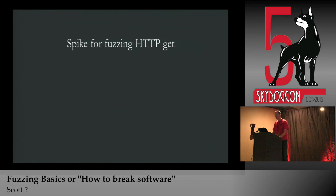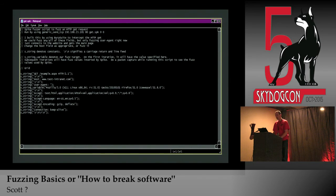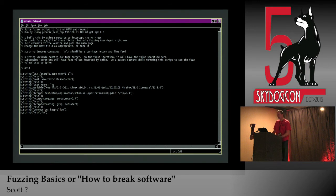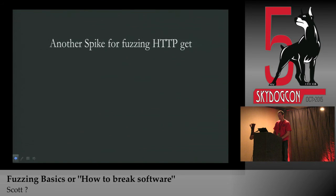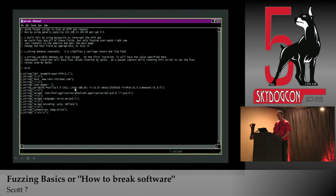I've got some sample Spikes for fuzzing HTTP GET. I used Burp Suite to intercept the HTTP GET and then built a Spike from it. The 's_string' is a constant; 's_string_variable' is the specific thing you want to fuzz. For the first pass, the HTTP GET will have a regular user-agent string as the variable; subsequent passes will have the fuzz strings inserted by Spike.